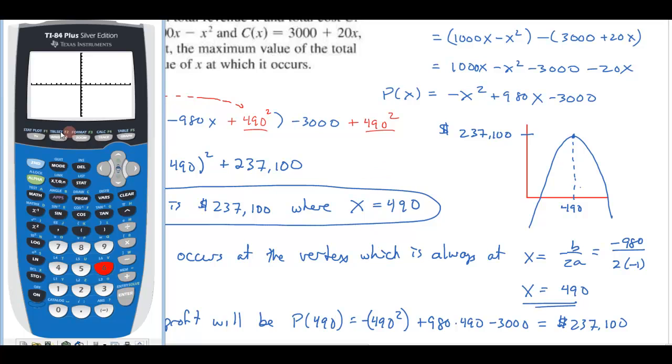So in this case, I could maybe just check and make sure I could go ahead and change my window. I need to go at least out to 490. Why don't we just set that from zero to a thousand? And I'll set my x scale at like a hundred. And then my y minimum, let's go from zero. I need to go at least to 237. Let's just put in here 300,000. And we'll make each one of these like 10,000.